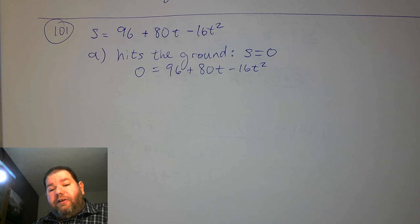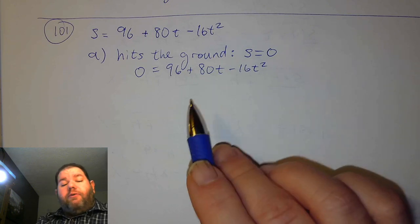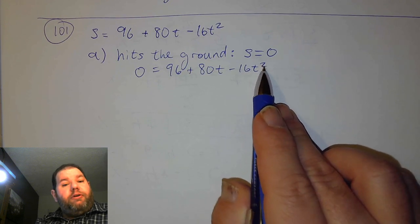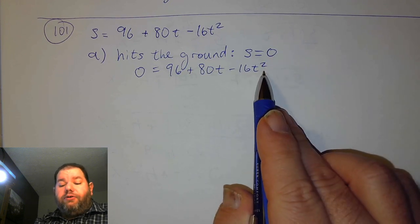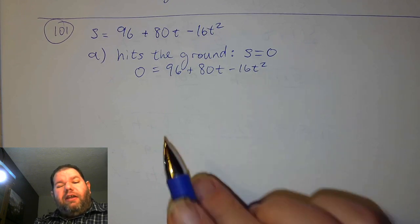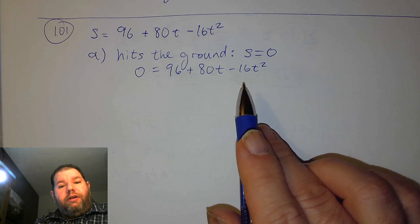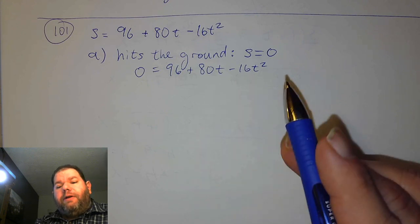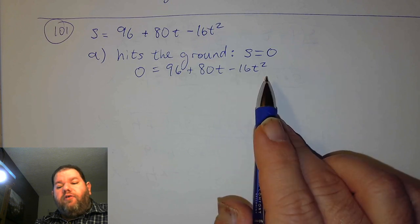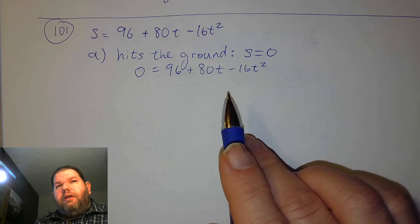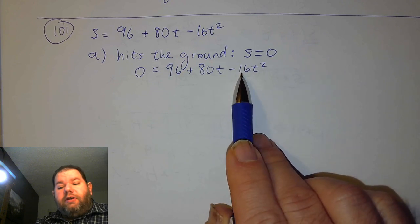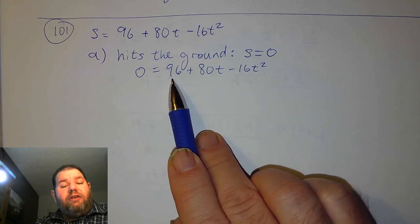Now we look at this equation — it's quadratic. We have a t squared, and anytime the variable is squared we know this is a quadratic equation. We could use the quadratic formula, but this one is actually factorable. If we were to use the quadratic formula, A would be negative 16, B would be 80, and C would be 96.